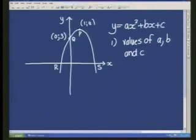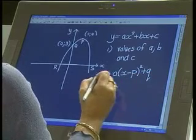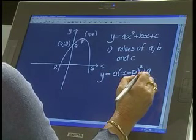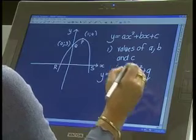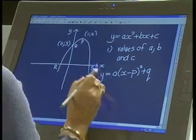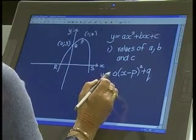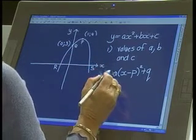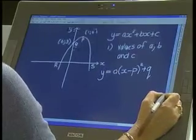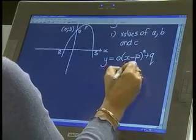Nongklankla recalls the formula y = a(x - p)² + q and correctly explains it's used when given a point and a turning point, which applies to this problem.